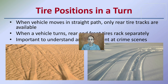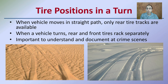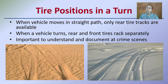When considering the position of tires in a turn, turns are great indicators. When a vehicle moves in a straight path, only the rear tire tracks are available to investigators. However, when a vehicle turns, the rear and front tire tracks track separately, so you can get an indication of both. It's important to understand and document these at a crime scene. Whether the tracks are made in sand, snow, mud, gravel, or any soft substance, tire positions through a turn can be a very important piece of information.